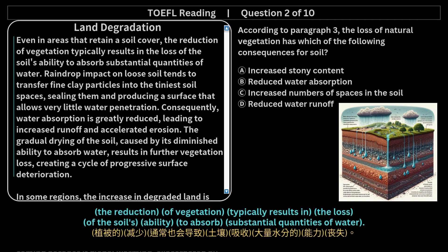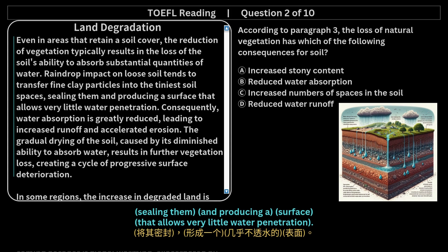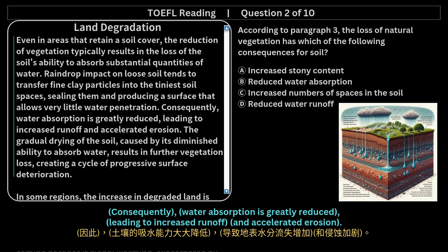Even in areas that retain a soil cover, the reduction of vegetation typically results in the loss of the soil's ability to absorb substantial quantities of water. Raindrop impact on loose soil tends to transfer fine clay particles into the tiniest soil spaces, sealing them and producing a surface that allows very little water penetration. Consequently, water absorption is greatly reduced, leading to increased runoff and accelerated erosion.